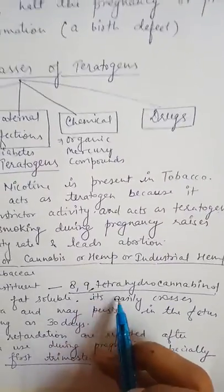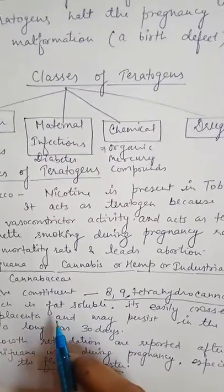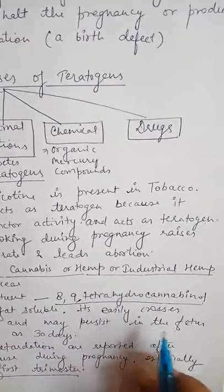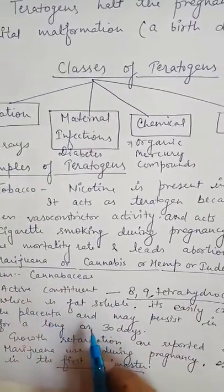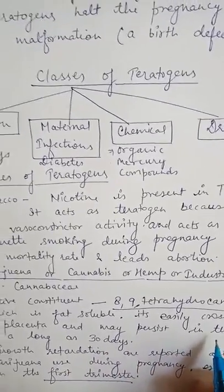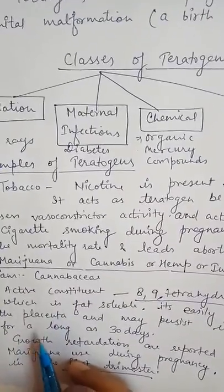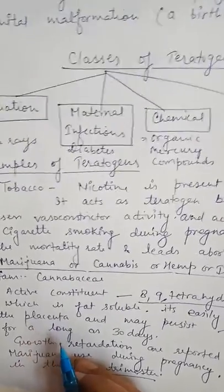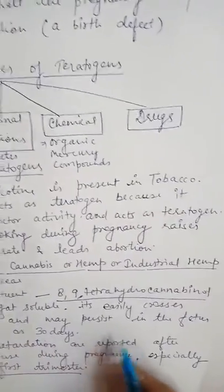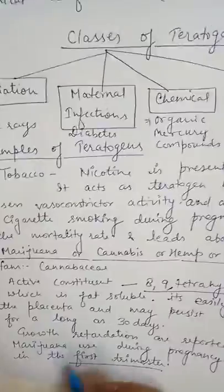Because it is fat soluble, delta-9-THC easily crosses the placenta — fat soluble drugs can easily cross and be carried across the placenta — and may persist in the fetus for as long as 30 days. This leads to growth retardation. Growth retardation is reported after marijuana use during pregnancy, especially in the first trimester.